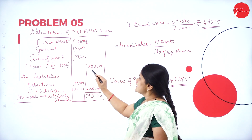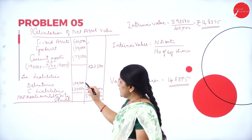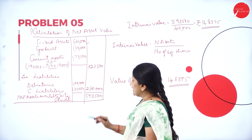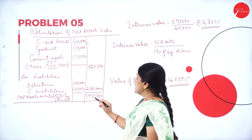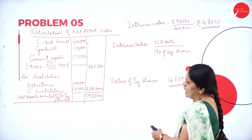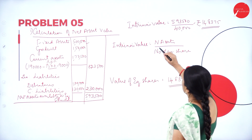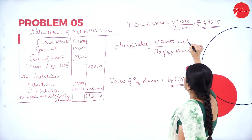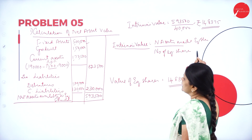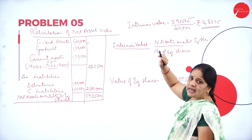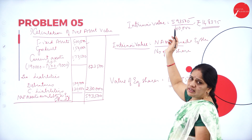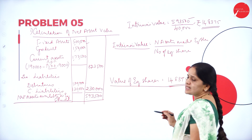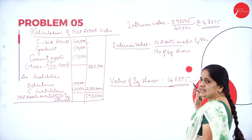Adding all assets: fixed assets 5 lakhs, goodwill 1,50,000, adjusted current assets 1,73,500 — total is 8,23,500. From this, I deduct liabilities: debentures 1 lakh and current liabilities 1 lakh 30,000, totalling 2,30,000. Net assets available to equity shareholders: Rs. 5,93,500. Intrinsic value equals net assets divided by number of equity shares: 5,93,500 divided by 40,000 equals Rs. 14.8375.